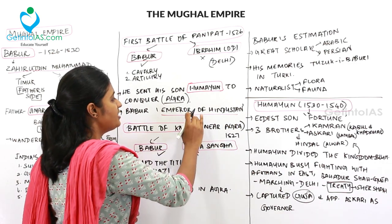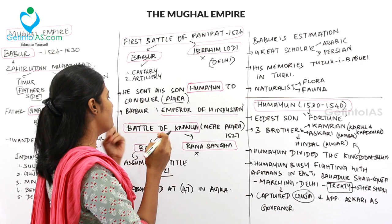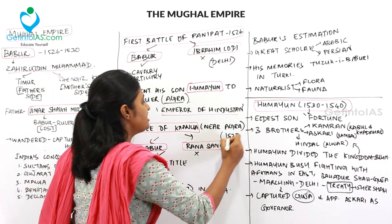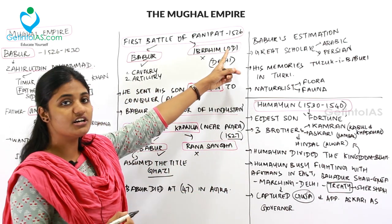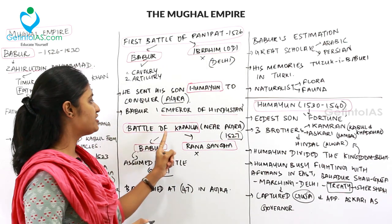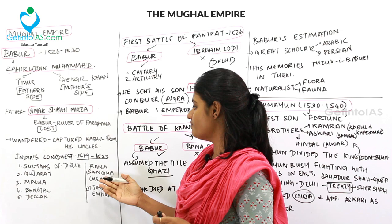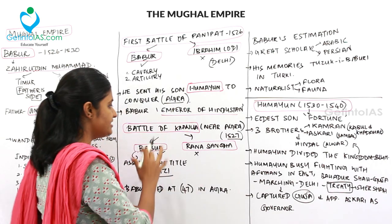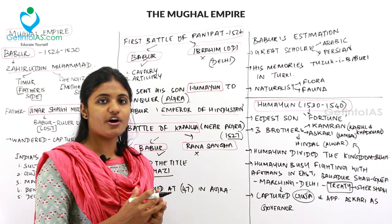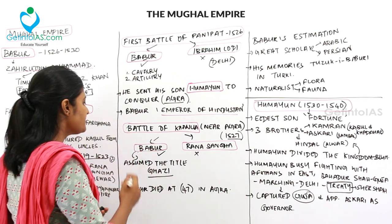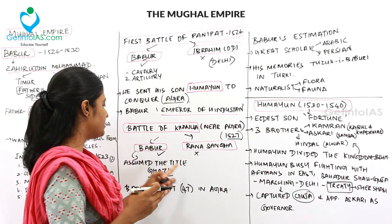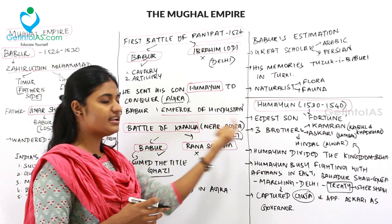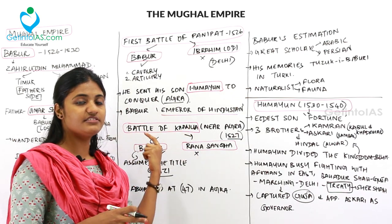Humayun captured Agra and Babur declared himself Emperor of Hindustan. The following year, 1527, the Battle of Khanwa took place near Agra. Rana Sangha of Mewar was a great warrior but lost in this battle. Babur won and assumed the title Ghazi. Under the Battle of Panipat he became Emperor of Hindustan, and under the Battle of Khanwa he assumed the title Ghazi.